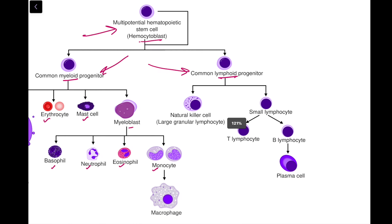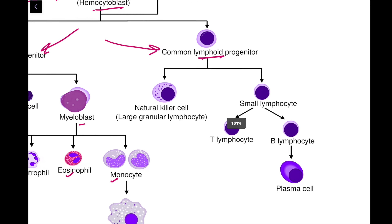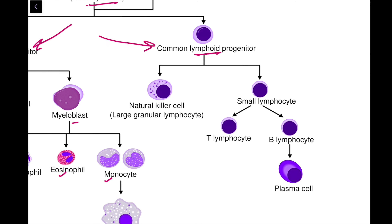Now let's take a look at the lymphoid series. Here the common lymphoid progenitor gives rise to the natural killer cells or NK cells, also called the large granular lymphocytes. The small lymphocytes on the other hand are of two types: B and T lymphocytes. The B lymphocytes further mature into antibody secreting cells, which are known as the plasma cells.